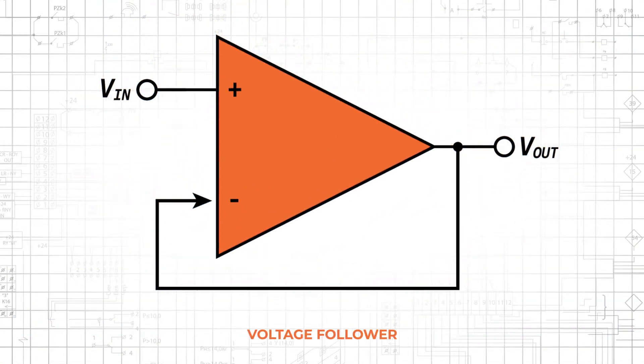The voltage follower is a circuit in which the output voltage follows the input voltage, or Vout equals Vin. An op-amp is the only required component. The voltage follower is a good reminder that the value of op-amps goes far beyond amplification. In fact, we frequently design op-amp circuits that are not intended to increase the amplitude of an input signal. In the case of the voltage follower, the desired functionality is buffering.